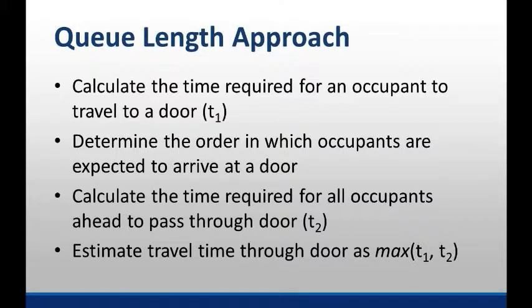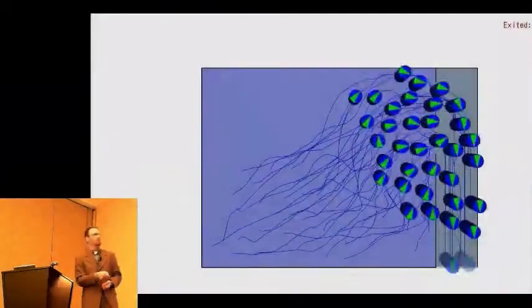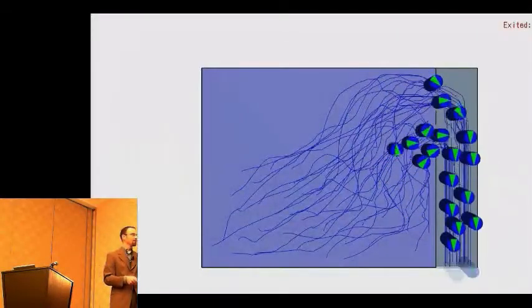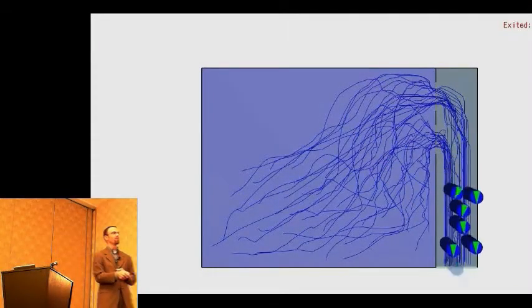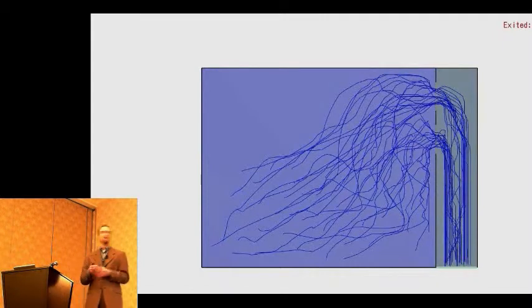If we go back and look at the same videos again, with the new model people are distributing out across all three doors. The total evacuation time is quite a bit shorter now because we're using all of the effective exits. We see the same thing on the second example — now they're using both exits equally. You'll even see a few people move away when the queue gets a little long and they decide it would be faster to go to the other door.